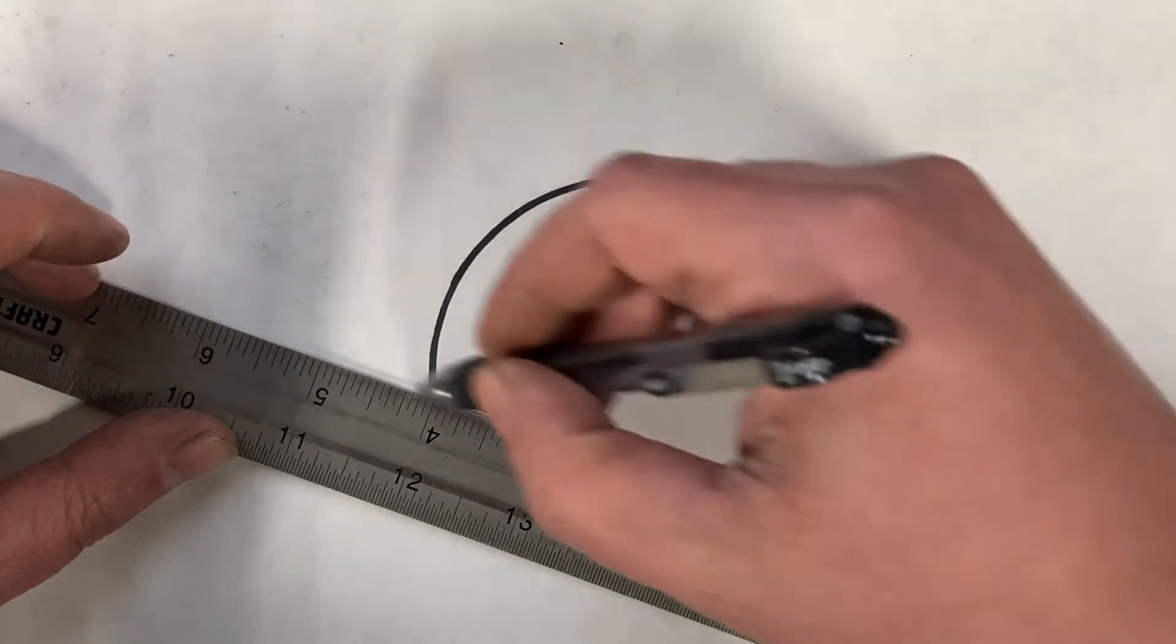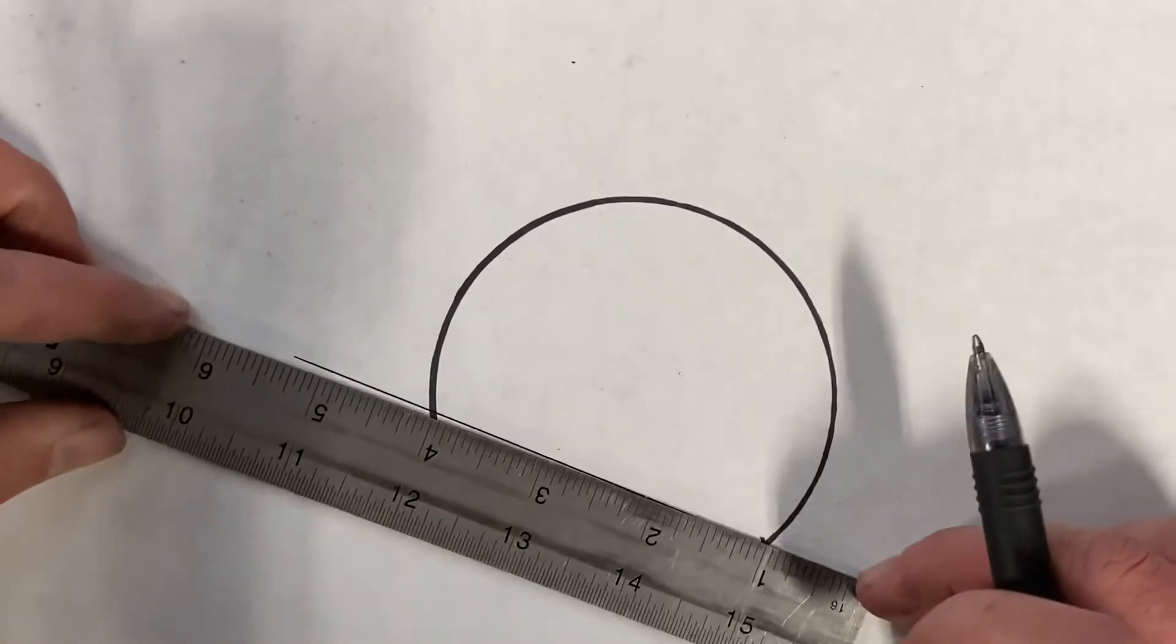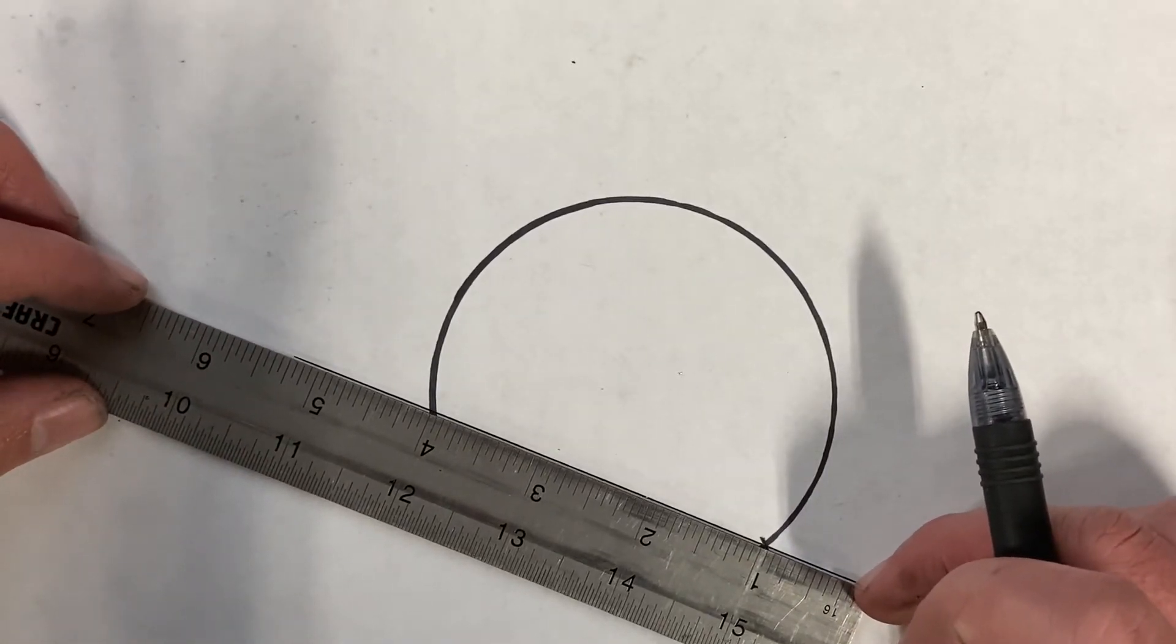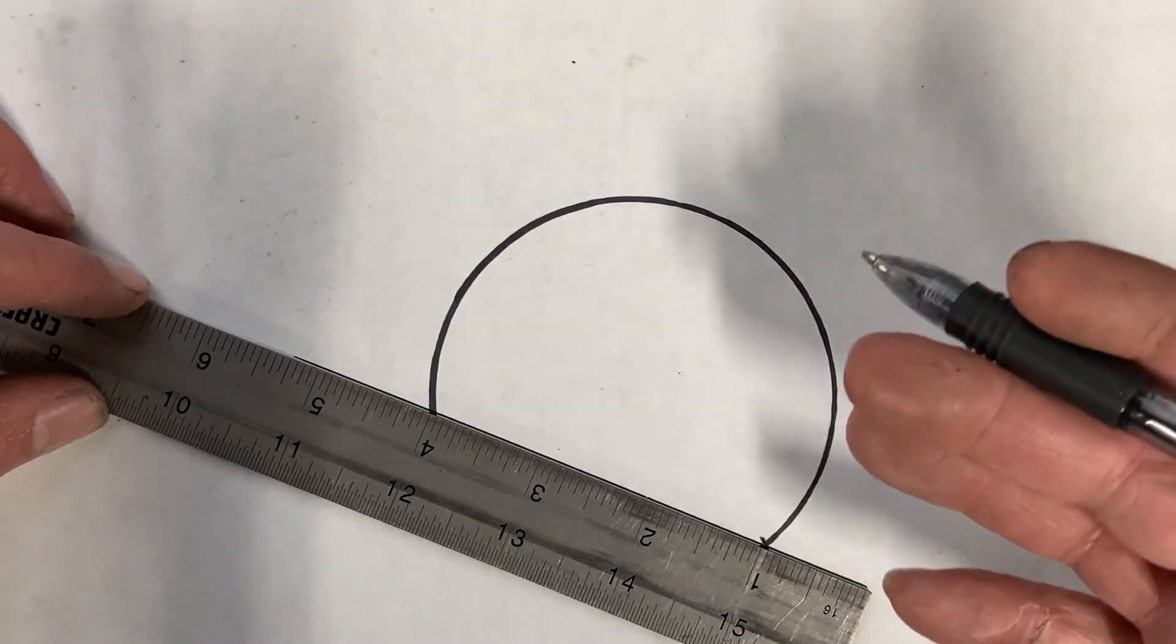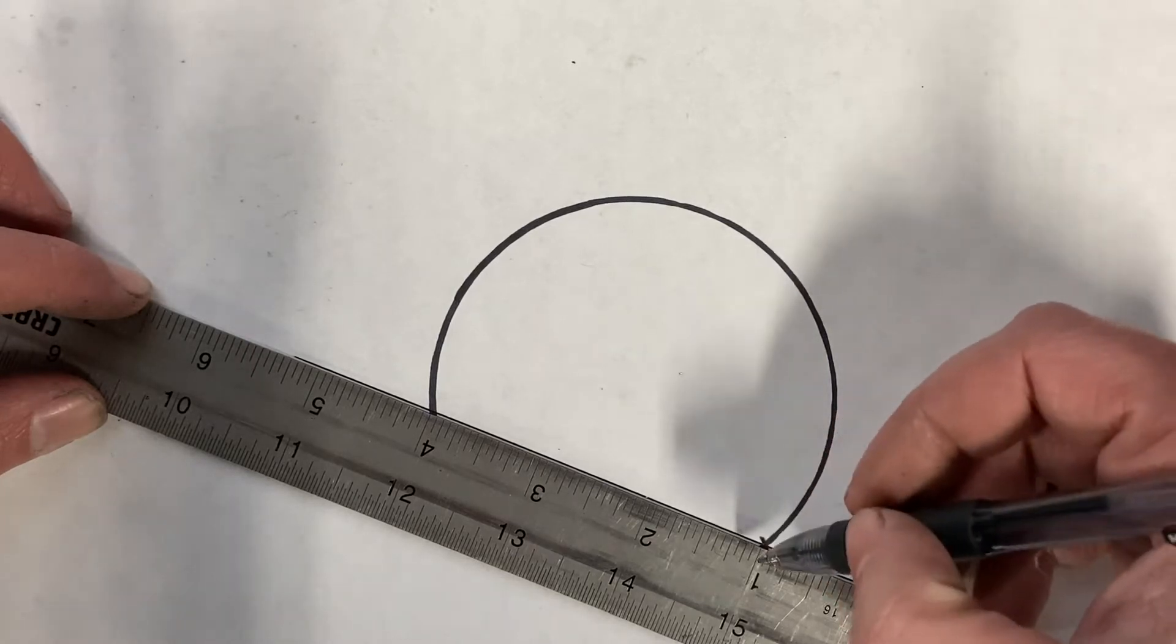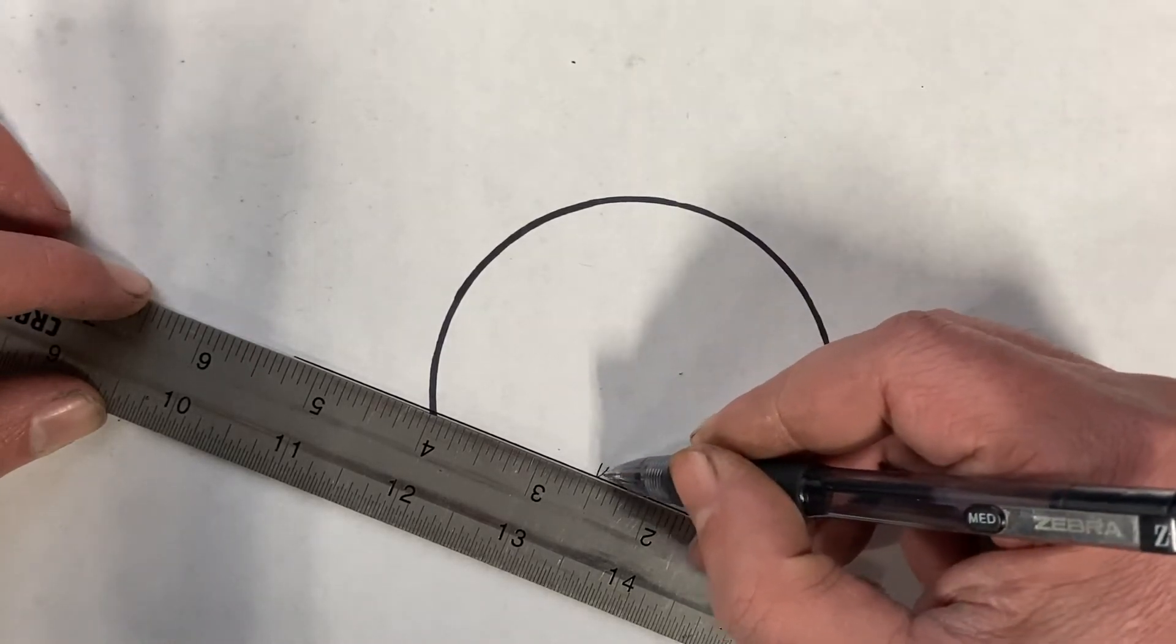And draw a line past the circle. Now from that three inches, half of three is one and a half. So from that one, go one and a half, make yourself a nice little V right here.